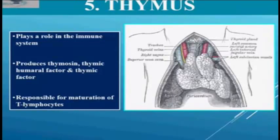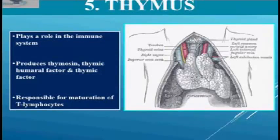Now thymus — this gland originates from the embryonic endoderm. As I have taught you, we have three germinal layers: ectoderm, mesoderm, and endoderm. So this gland, that is thymus gland, is derived from embryonic endoderm. And it is located in the mediastinum on the dorsal side of the heart.